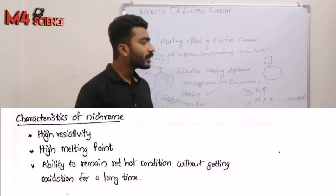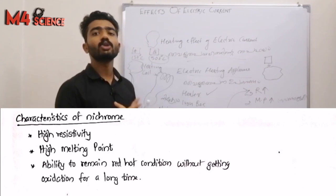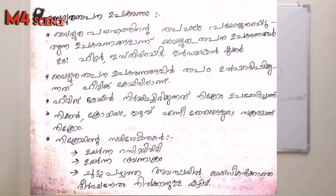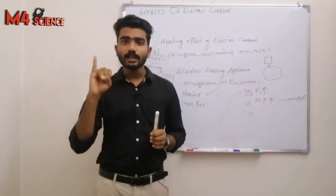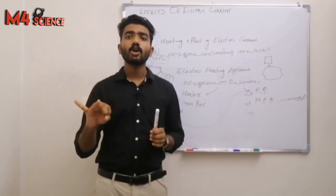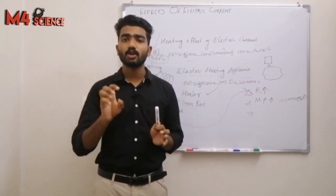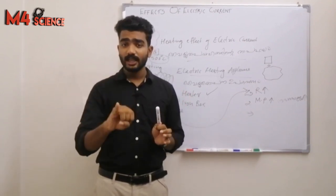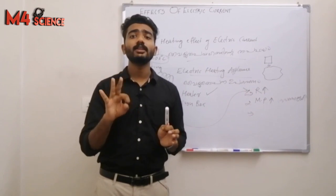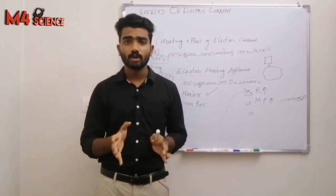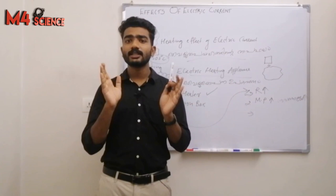Nichrome is made of nickel, chromium, and iron — nickel chromium iron alloy. That is the composition of nichrome.